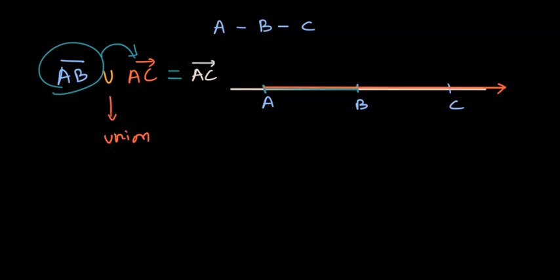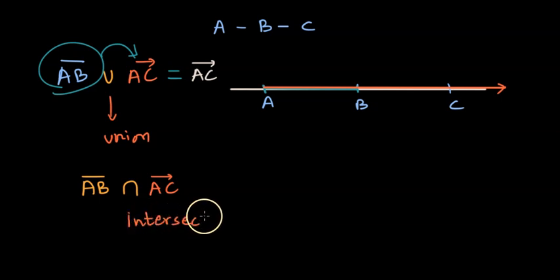But what if we had a question like this: segment AB intersection Ray AC? In that case, we want intersection or the common points between segment AB and Ray AC. Let me use green color to show the intersection or the common points. All the points which are in segment AB are part of Ray AC. So this common region that I can show in light green is basically segment AB, and therefore the answer to this will be segment AB.